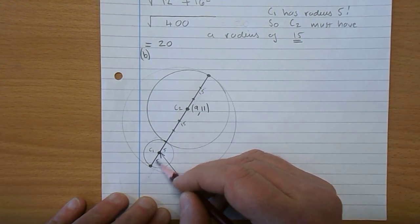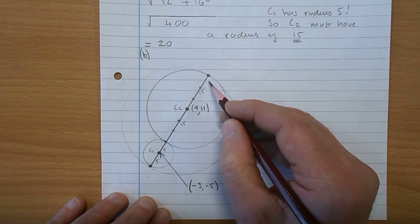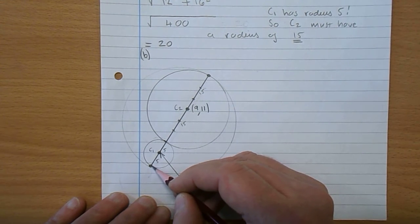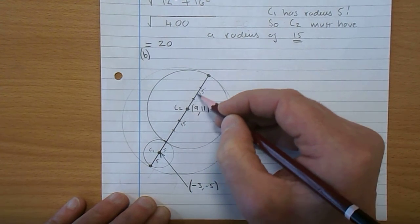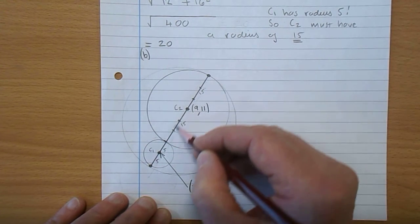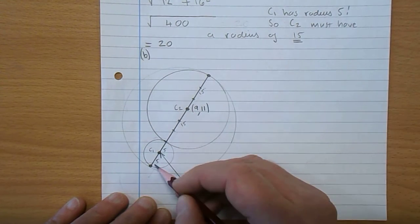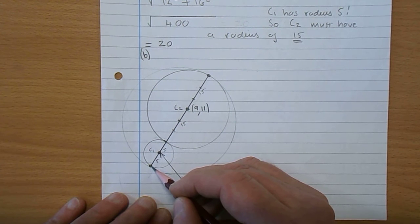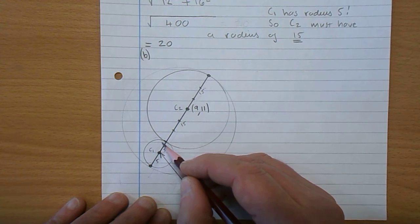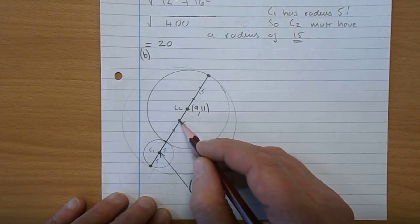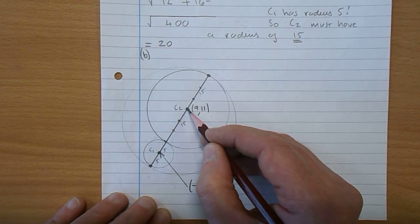Now, with C1 having a radius of 5 and C2 having a radius of 15, I can draw a line going right through C1, C2, as a diameter of the circle C3. And each radius is 5, so that's 5, that's 5, 5, 10, 15. Remember,